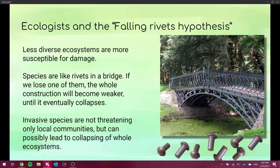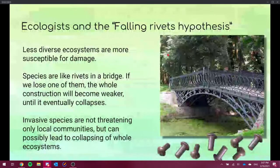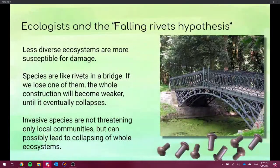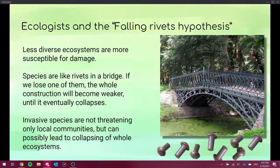And the same thing is for ecosystems. The less diverse ecosystems are more susceptible for damage. So invasive species are not threatening only local communities, but can possibly lead to collapsing of whole ecosystems by mainly by limiting the diversity of foods. Because that can strongly affect the whole trophic pyramid.